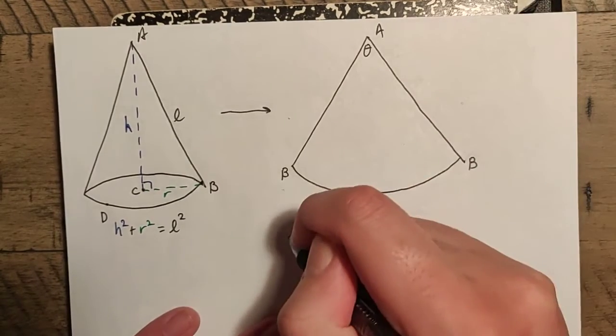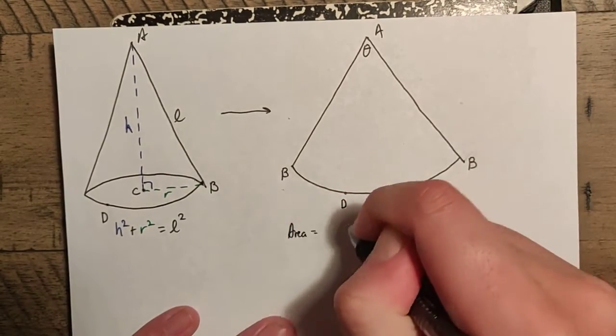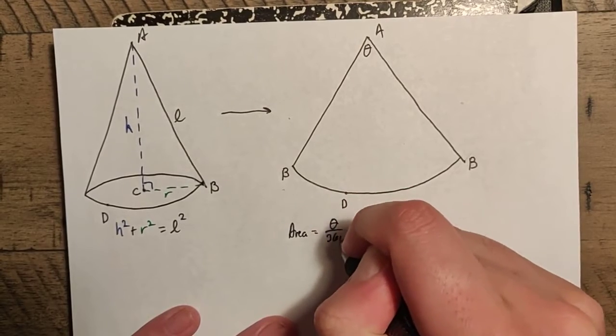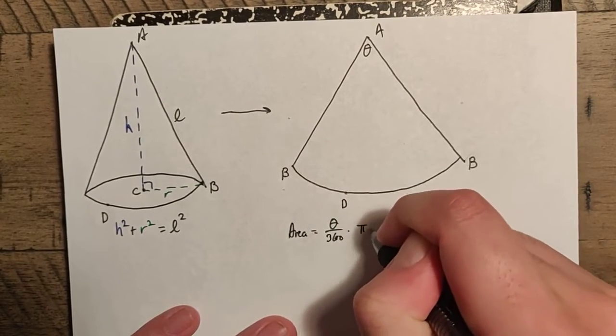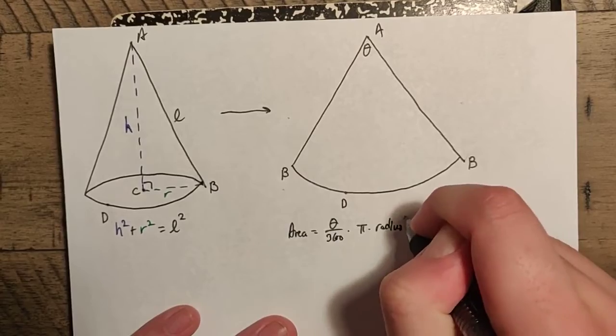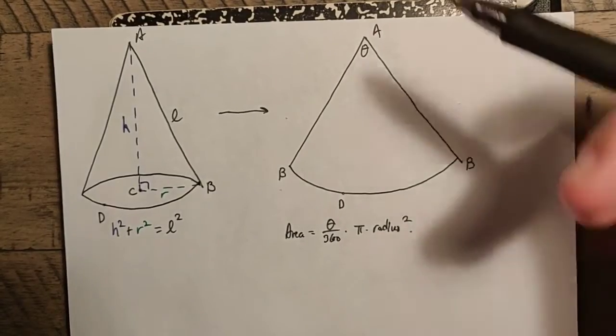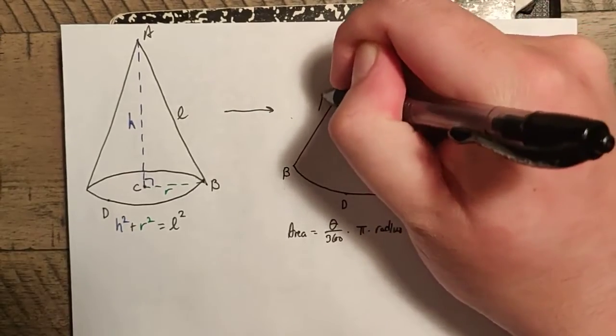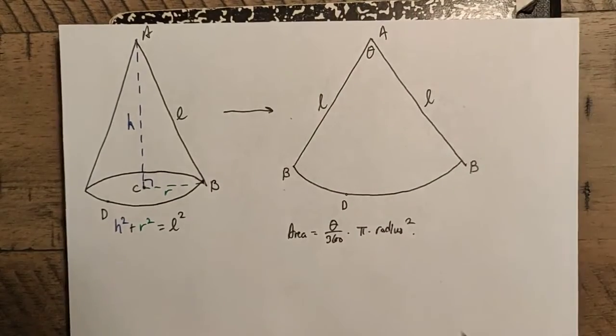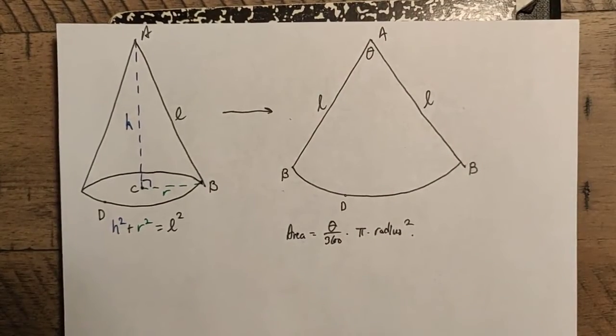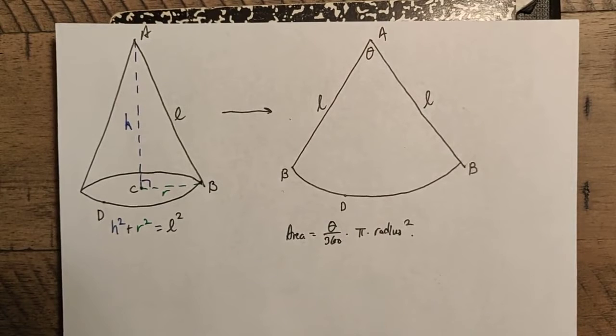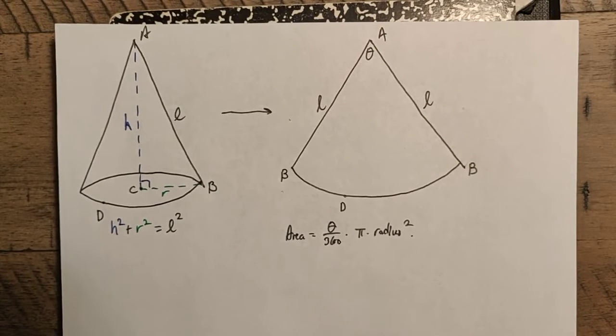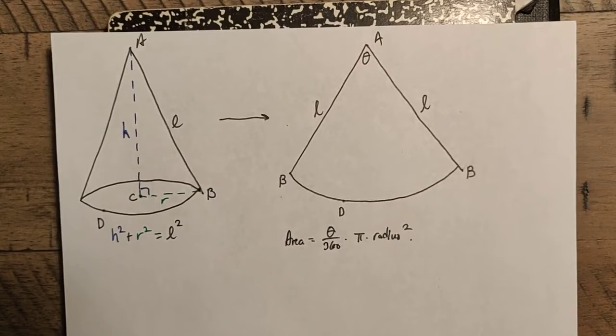Well, we know that this is a sector, so the area of the sector is going to be theta over 360 times pi times the radius squared. Okay, well, nice part is we can transfer things over. A, B transfers over here. We know that this circle has radius L. That's going to be helpful, so we can stick L here. Now, of course, we don't know what theta is. And theta can change, so we have to be kind of careful. So, we need to find another piece of information.